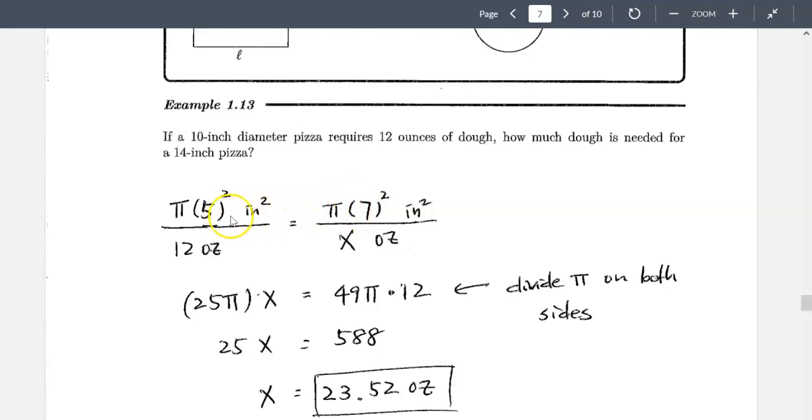So I might have the 5 inch compared to a 7 inch pizza. Well I'm sorry, 10 inch versus 14 inch pizza. But since when we talk about 10 inch pizza and 14 inch pizza is really the diameter, so we need to use 5 for radius. On the bottom, since the 10 inch pizza uses 12 ounces of dough, then how much would it be if we wanted 14, how much dough do we need for the 14 inch pizza.